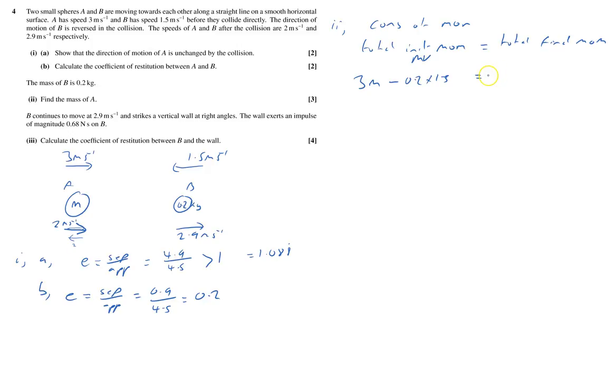And that will equal 2M. And this is also going to be positive as well, so plus 0.2 times 2.9. And take away an M, that will be M equals 0.88.